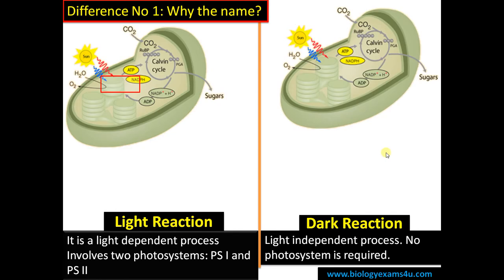Dark reaction is a light independent process. No photosystem is required in the process. In dark reaction, carbon dioxide is reduced or converted to sugar, carbohydrate, or glucose using the energy produced during light reaction — that is, the ATP and NADPH produced during light reaction.